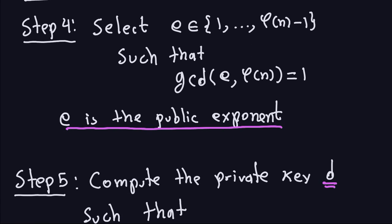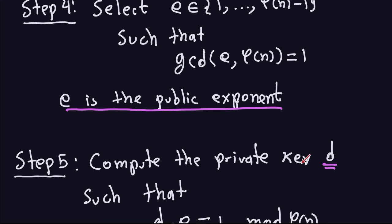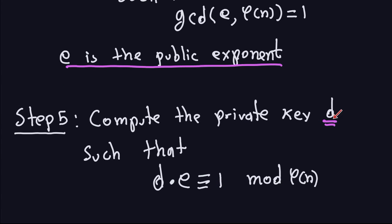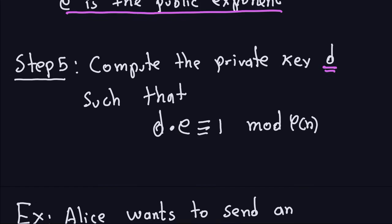The last step is to compute the private key D, which Bob will use to decrypt messages. We compute D such that d*e ≡ 1 mod φ(N). This means d*e − 1 is divisible by φ(N). After following these steps we have computed both the public key and the private key.